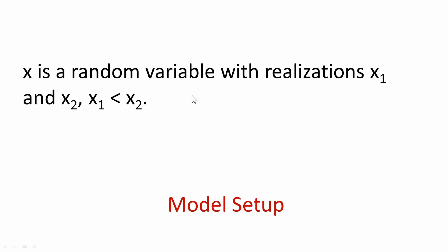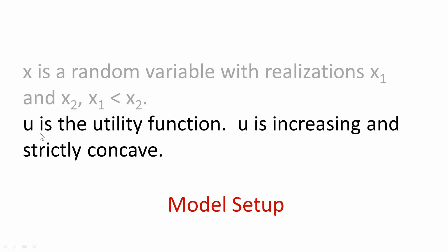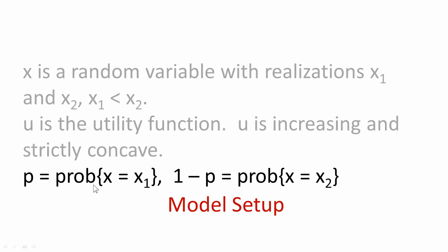Let's go through our setup. The random variable we have is x. It has two possible realizations, x1 and x2. x1 is the smaller of the two realizations. We have a utility function u — increasing and strictly concave. P is the probability that x takes the lower value x1. Since the probabilities have to add up to one, one minus P is the probability that the random variable takes on the value x2, the higher value.